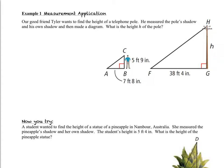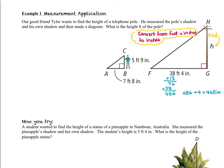The first thing we need to do is convert our feet and inches into either all inches or all feet. To convert feet and inches into only inches, we take the feet, multiply by 12, and then add the product to the inches. The telephone pole's shadow converts from 38 feet 4 inches to 460 inches. Tyler's shadow converts from 7 feet 8 inches to 92 inches. Tyler's height converts from 5 feet 9 inches to 69 inches.